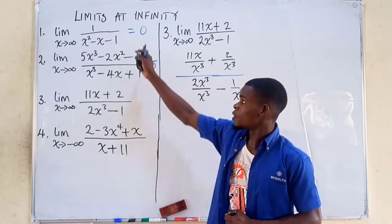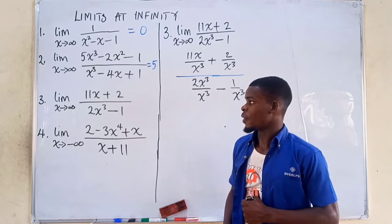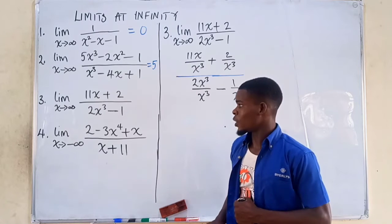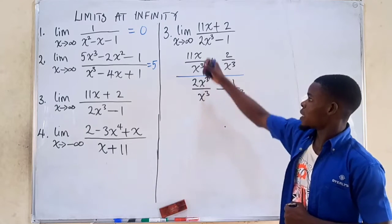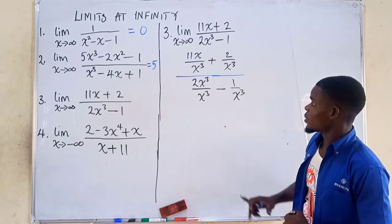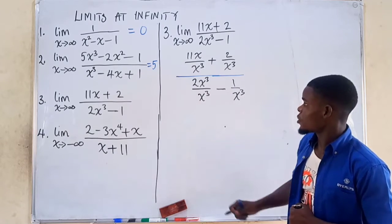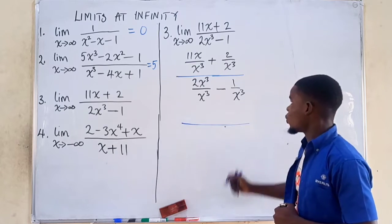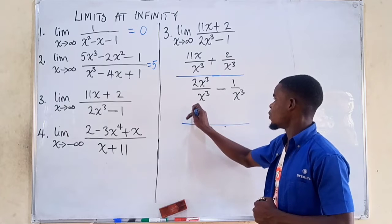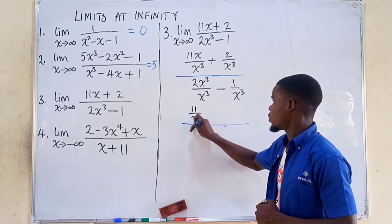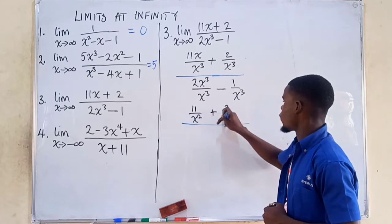In our previous video, we solved the first and second problems, getting limits of 0 and 5 respectively. Now we do some cancellations. In the numerator, x cancels one of the x's in x³, giving us 11 over x squared, and then plus, since there is nothing to cancel, we are left with 2 over x cubed.